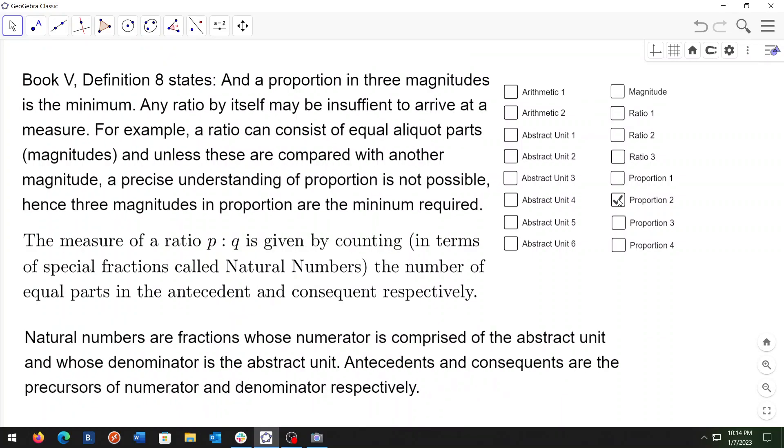Book 5 definition eight states that a proportion in three magnitudes is the minimum. Any ratio by itself may be insufficient to arrive at a measure. For example, a ratio can consist of equal aliquot parts magnitudes and unless these are compared with another magnitude, a precise understanding of proportion is not possible. Hence, three magnitudes in proportion are the minimum required.